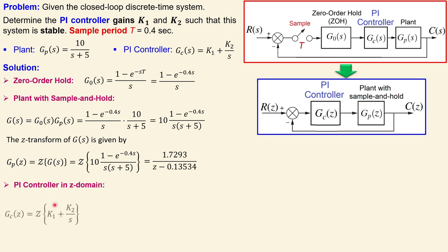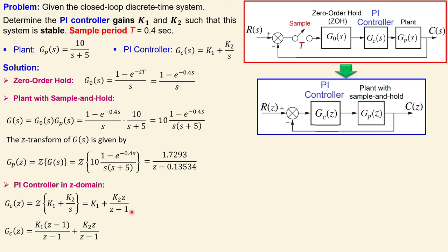The PI controller in the z-domain is also required. The z-transform of the s-domain PI controller gives k1, while k2/s converts to k2*z/(z-1), since 1/s maps to z/(z-1) from the z-transform table. Converting this to one fraction, we get k1*(z-1)/(z-1) plus the second term combined, which gives a single fraction expression that will be helpful for the next steps.